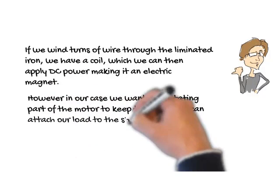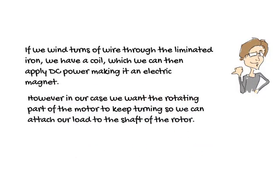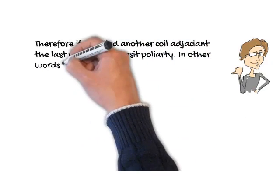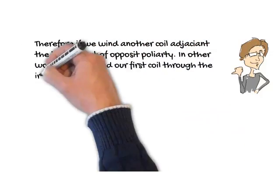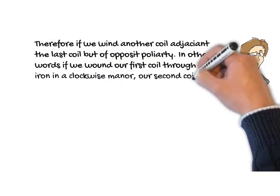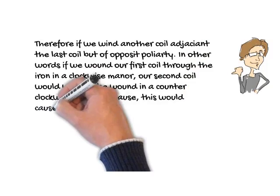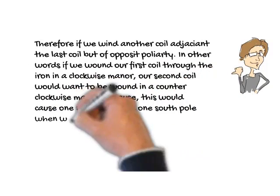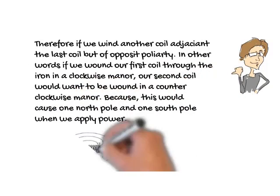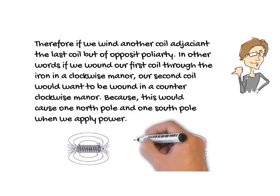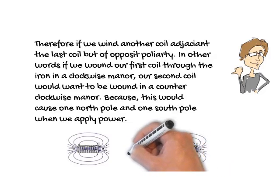However, in our case, we want the rotating part of the motor to keep turning so we can attach our load to the shaft of the motor. Therefore, if we wind another coil adjacent the last coil, but of opposite polarity. In other words, if we wound our first one through the iron in a clockwise manner, our second one would want to be wound in a counterclockwise manner.